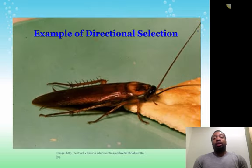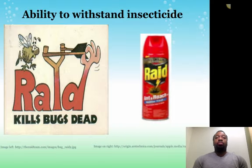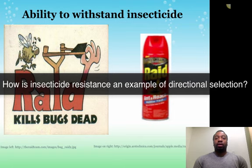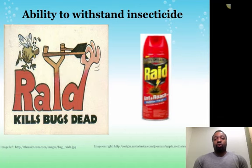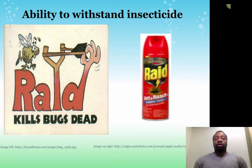Here's another example of directional selection: our roach population and their ability to withstand insecticide. Think about why resistance to insecticide is a good example. The roaches with the highest resistance levels are going to be favored over the intermediate and least resistant roaches. Those resistant roaches will reproduce more often, and the curve should again shift to the right.